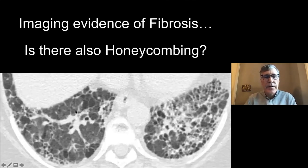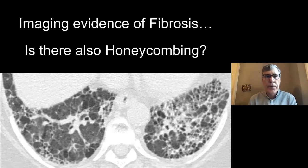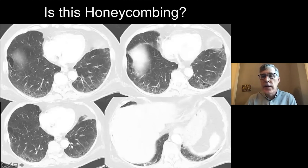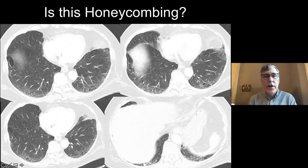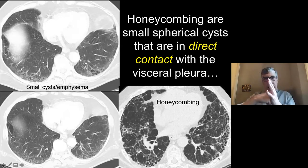So take a look: is there imaging evidence of fibrosis? Yes — irregular visceral pleura for sure, reticulations, a little ground glass with some fibrosis. Is there also honeycombing? These look like they're right up against the wall — yes, I think there's honeycombing. This patient has usual interstitial pneumonitis, UIP. Now, does this other patient have honeycombing? They have reticulation, ground glass, and little cystic areas — but take a close look: they are not up against the pleura. This is not honeycombing. These were actually little cysts or emphysema. Compare that to true honeycombing, which is right up against the pleura — remember, it has to be against the pleura.